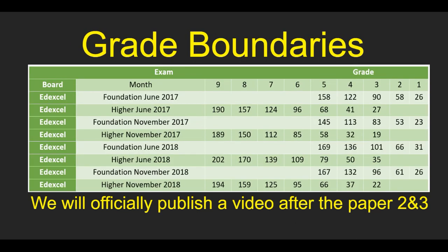Next, we're talking about the grade boundaries. You can see on the screen 2018, 2017, November recent papers. If you're aiming for A or A star, you're pretty much looking at 124-125. However, in June 2018 the boundary was 139 because the exam was very easy. We're not going to make any premature decision or prediction for this grade boundary. We will officially publish a video after paper two and three are completed.